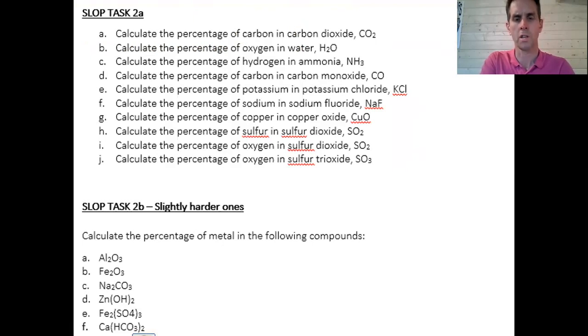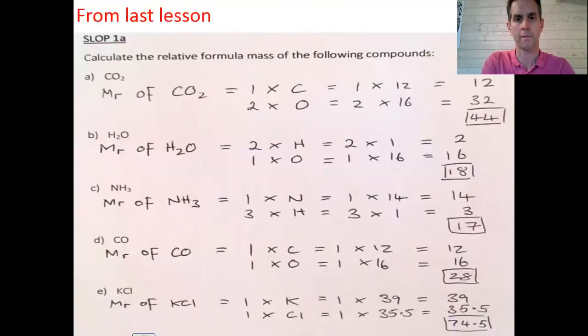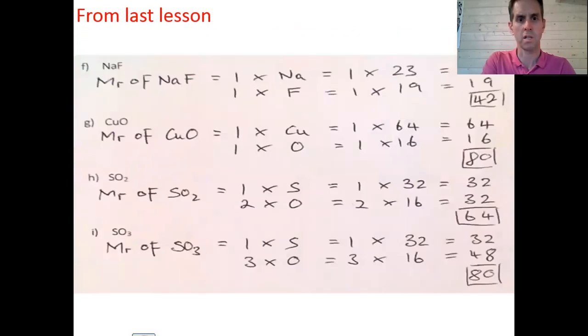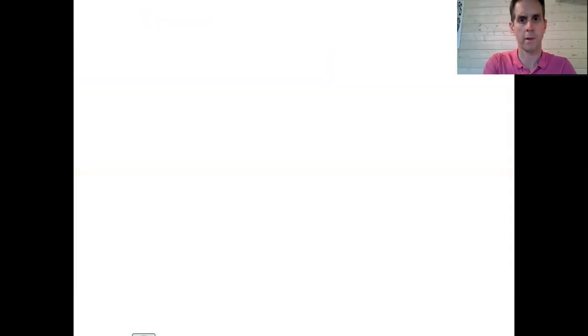You're also going to need some answers from yesterday's lessons. You're going to need the relative formula mass calculations for SLOP 1A. The answers are here, so if you can't find yesterday's answers, then I suggest that you copy just the formula mass numbers, the ones in the boxes. Copy those down. So that's A to E, and you're also going to need these compounds as well, so F to I. Okay, I'm going to switch you to camera now.